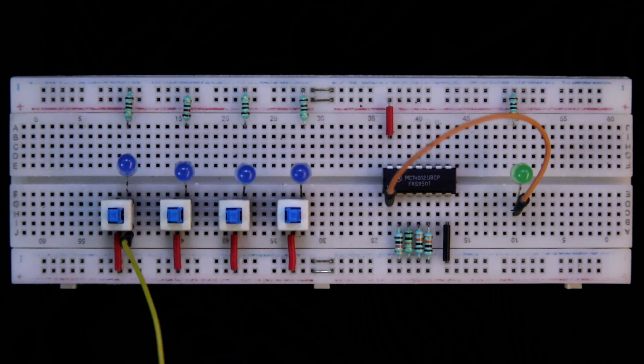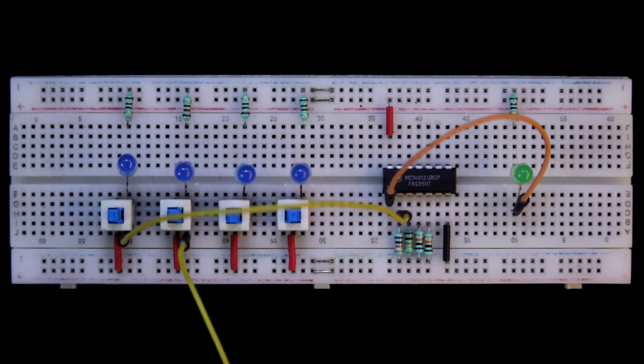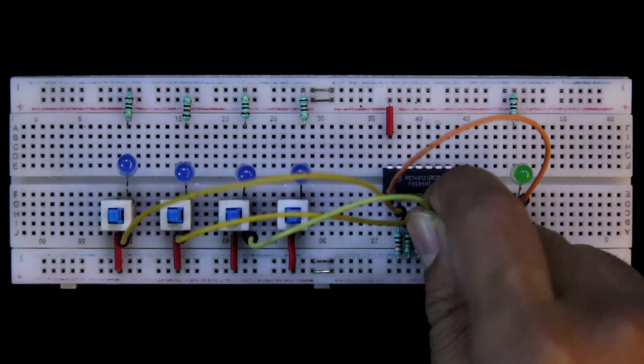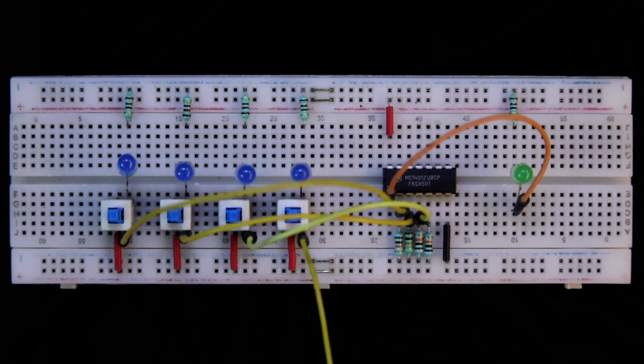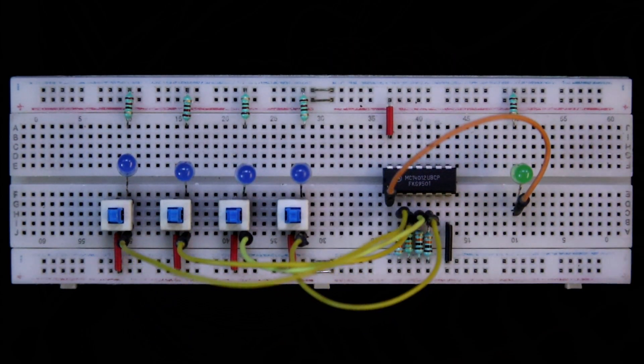Switch A is connected to pin number 2. Switch B is connected to pin number 3. Switch C is connected to pin number 4. And switch D is connected to pin number 5. So here is the connection.